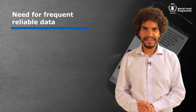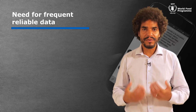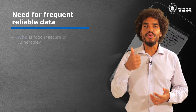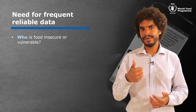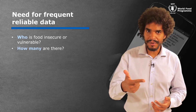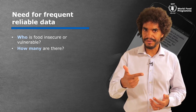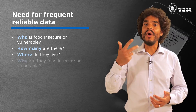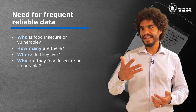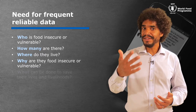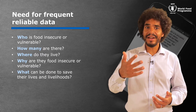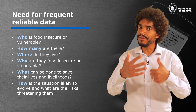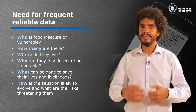The Vulnerability Analysis and Mapping Unit that I work for needs to provide information on who is food insecure or vulnerable, how many people are food insecure or vulnerable, where they live, why they are food insecure or vulnerable, what can be done to save their lives and livelihoods, and how the situation is likely to evolve, and what risks threaten them.